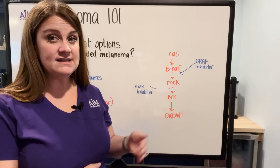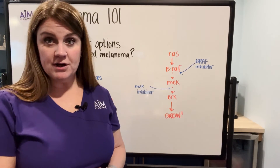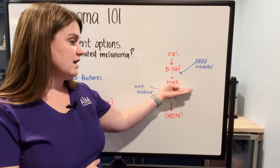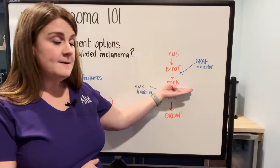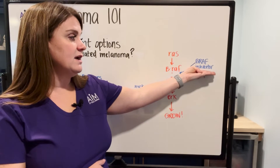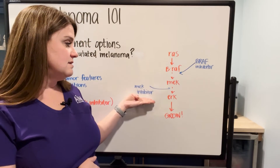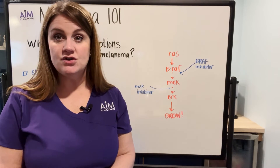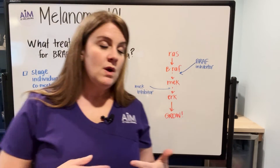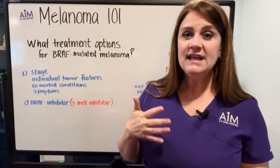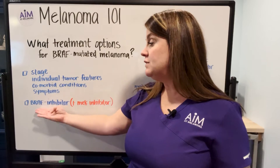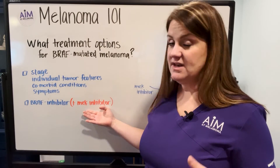So researchers looked at how to target the MEK part of this pathway. Drugs called MEK inhibitors were developed that help block the pathway at the level of MEK to prevent cellular growth. By blocking both the BRAF and MEK parts of the pathway, they saw greater efficacy in controlling tumor growth and also fewer side effects. So if targeted therapy is presented to you as an option, you will typically see both a BRAF and a MEK inhibitor given together.